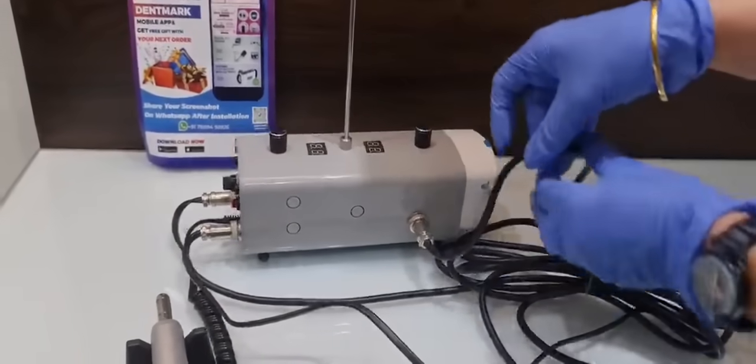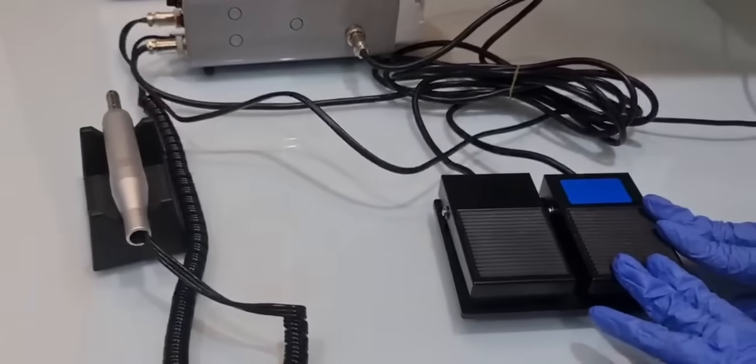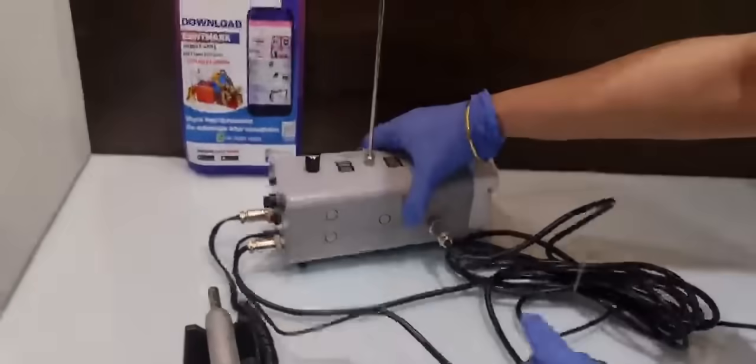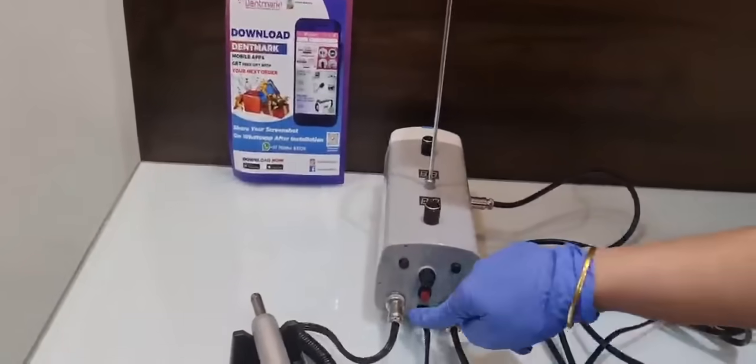This is the button where you need to attach this cord. This cord is attached to the foot control of the water pump. Apart from this there is one more cord which is attached to the electric power.